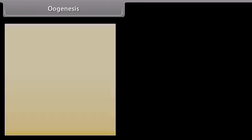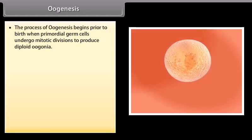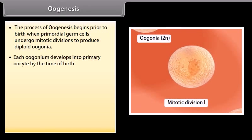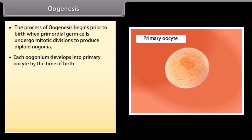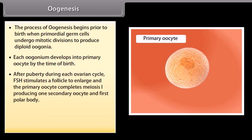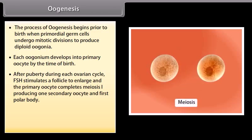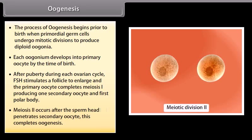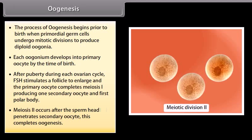Oogenesis begins prior to birth when primordial germ cells undergo mitotic divisions to produce diploid oogonia. Each oogonium develops into a primary oocyte by the time of birth. After puberty, during each ovarian cycle, FSH stimulates a follicle to enlarge and the primary oocyte completes meiosis I, producing one secondary oocyte and the first polar body. Meiosis II occurs after the sperm head penetrates the secondary oocyte, which completes oogenesis.